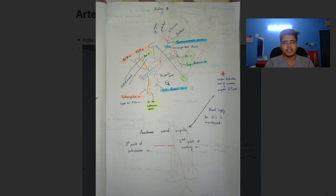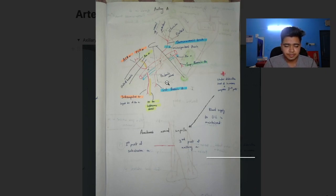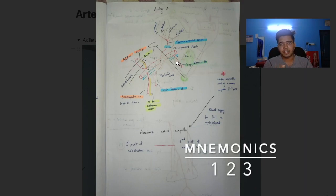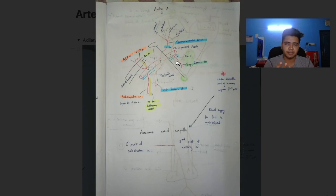It is quite easy to remember all the branches of the axillary artery. The first part has one branch, the second part has two branches, and the third part has three branches.